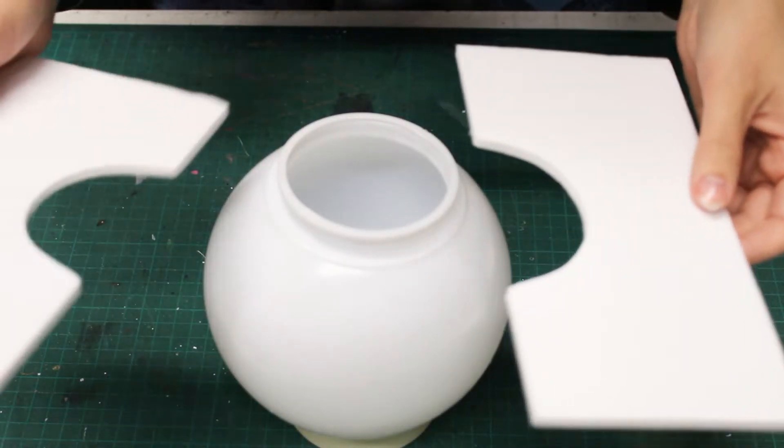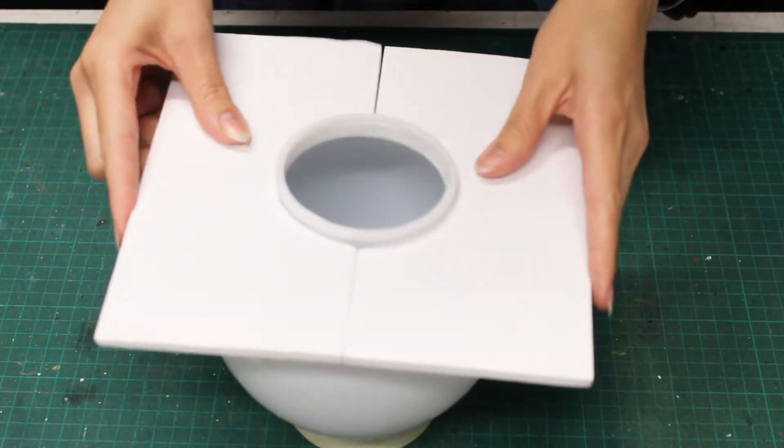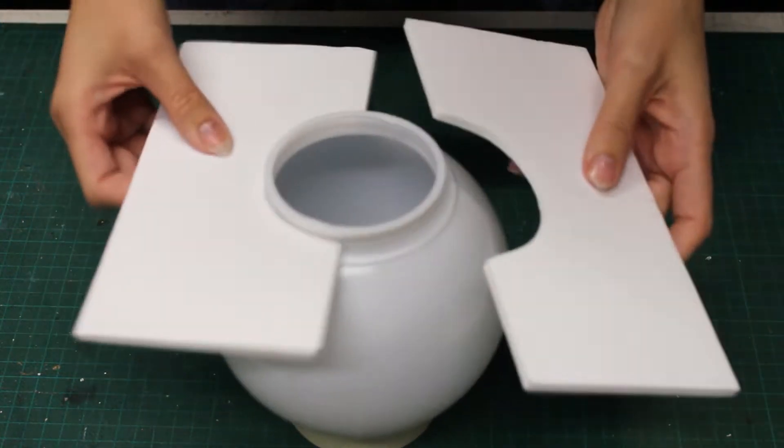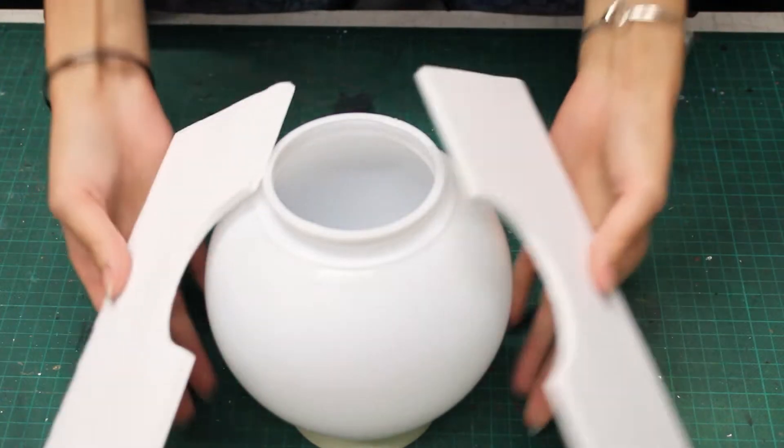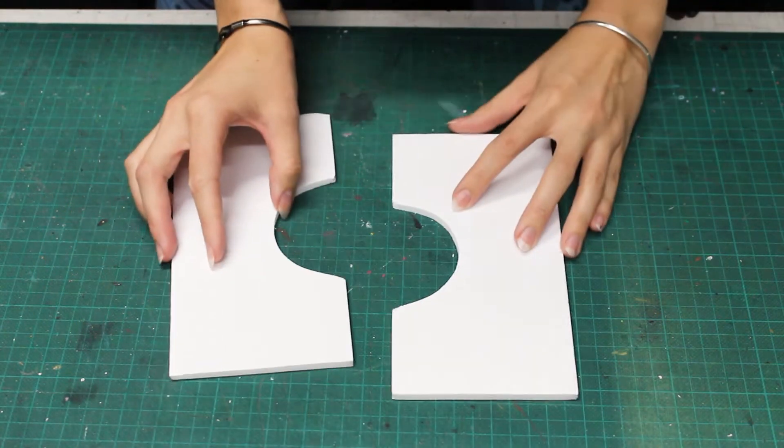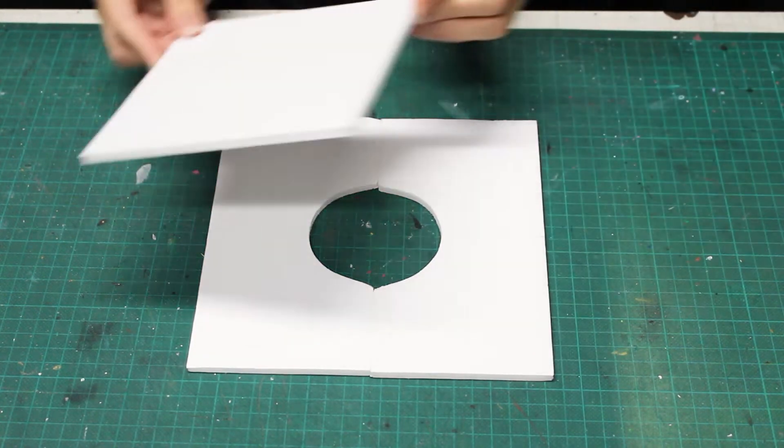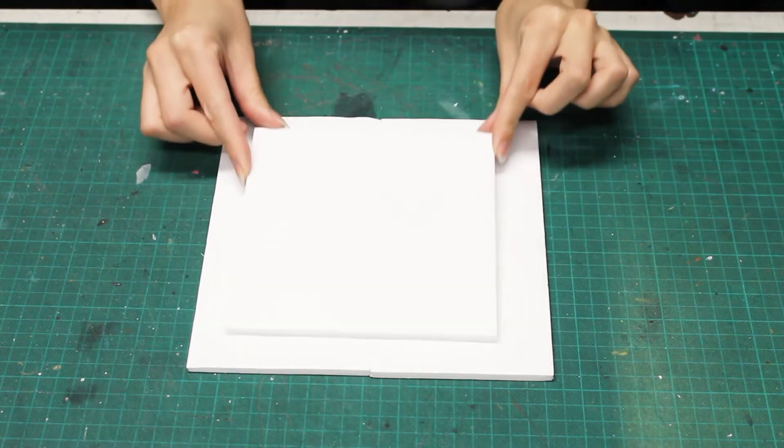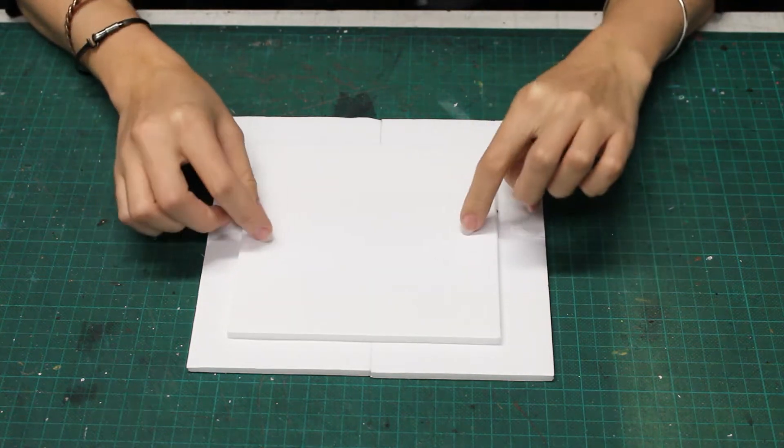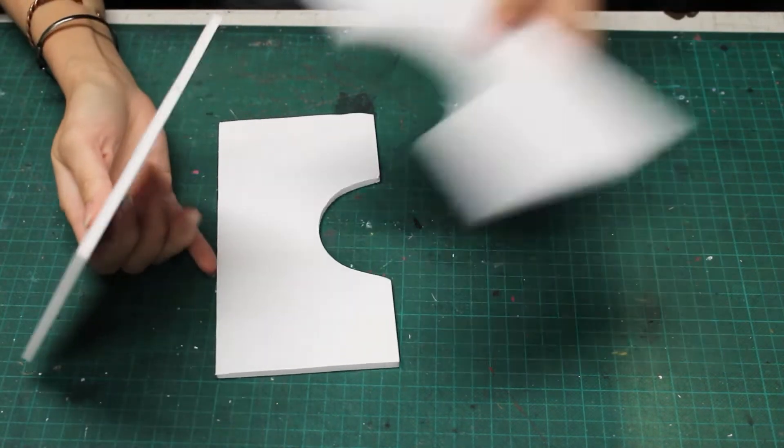I've gotten the top piece of my stand to fit perfectly with my light cover. Taking a smaller square of foam board, I'm going to create another piece that will attach these two halves together. This won't be seen, so it doesn't have to be absolutely perfect.